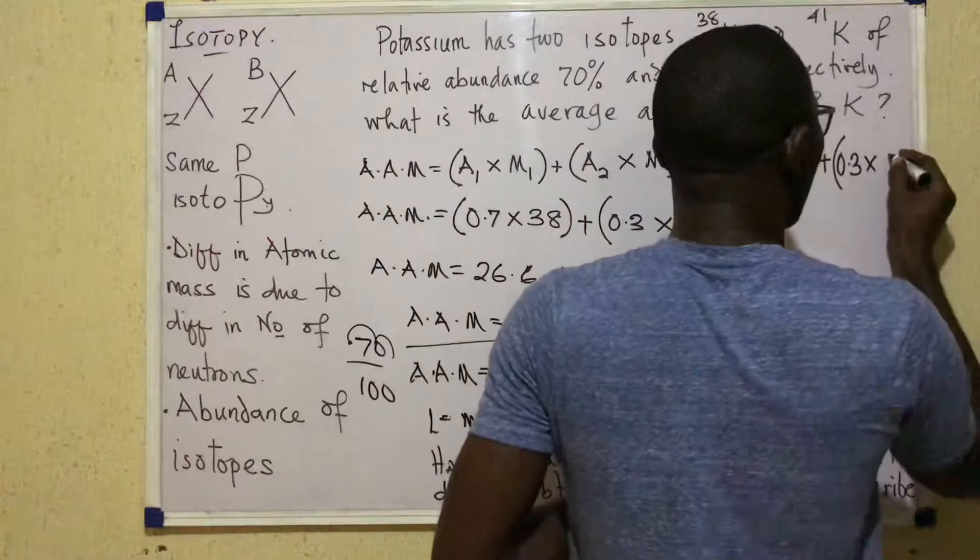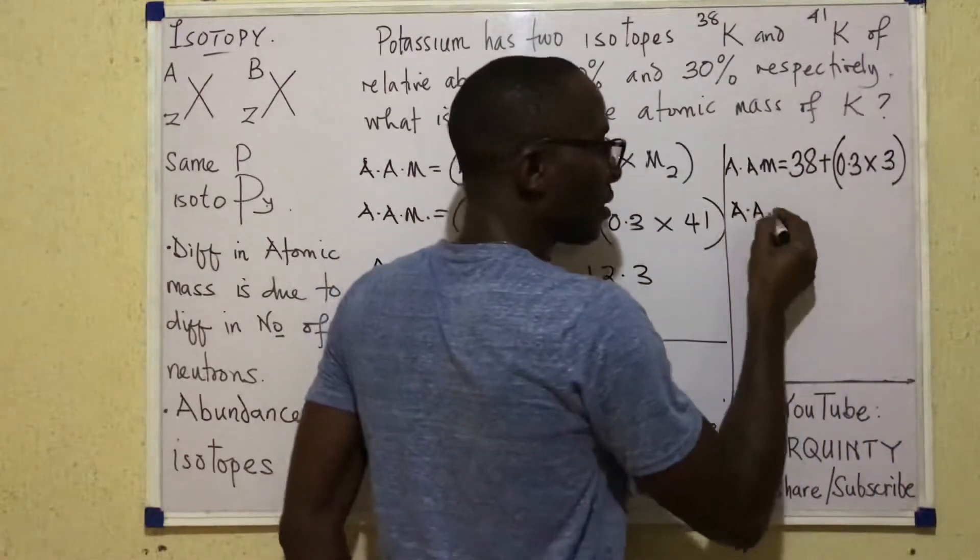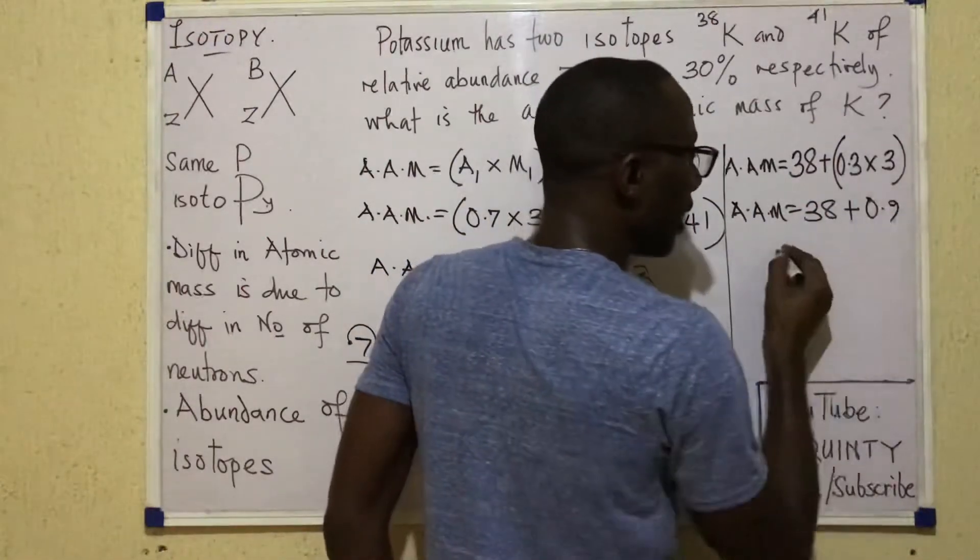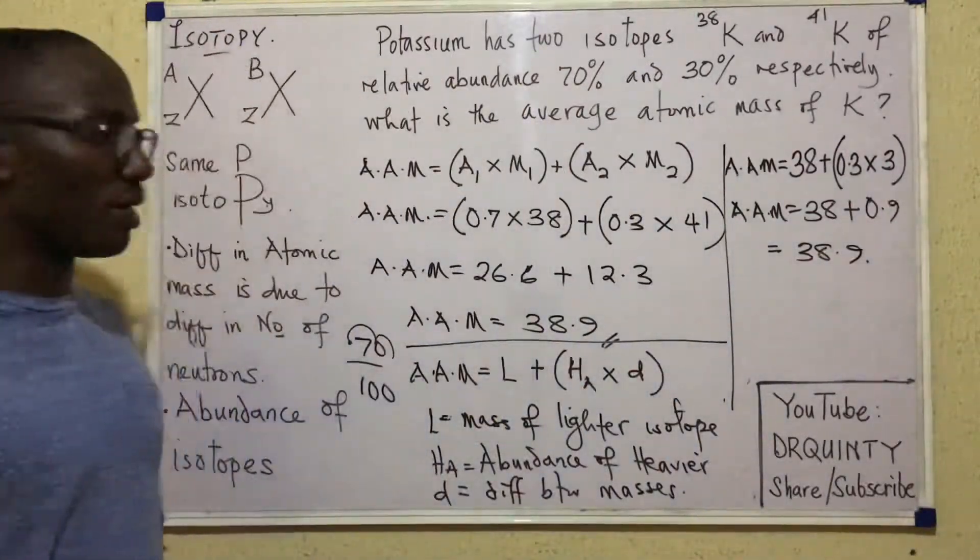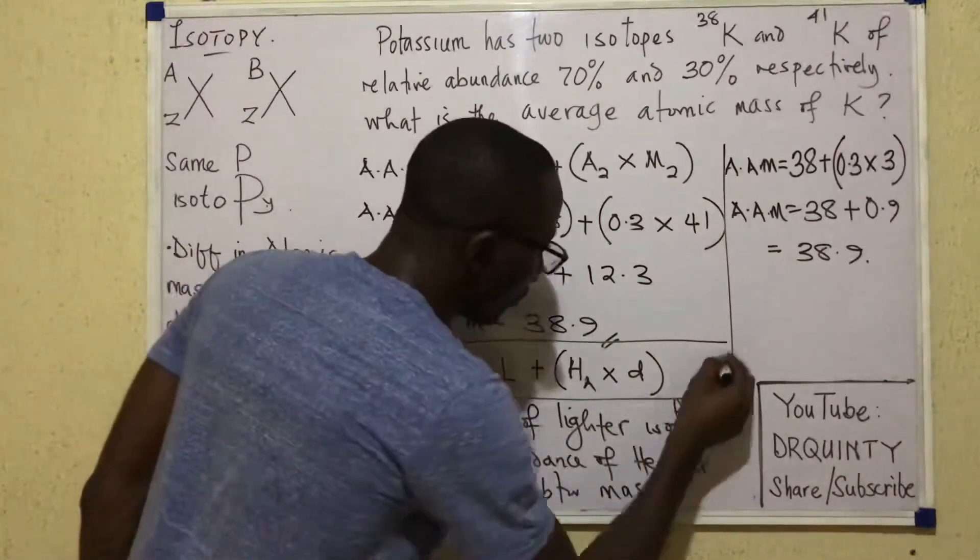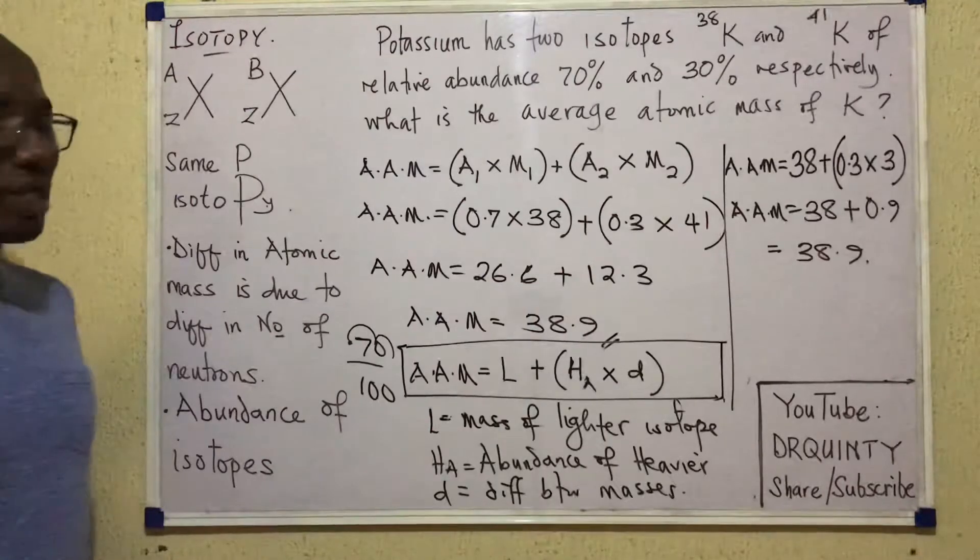So I put 3 there. So that the average atomic mass is obtained as 38 plus 0.9. And that gives me 38.9. So the same answer, 38.9.